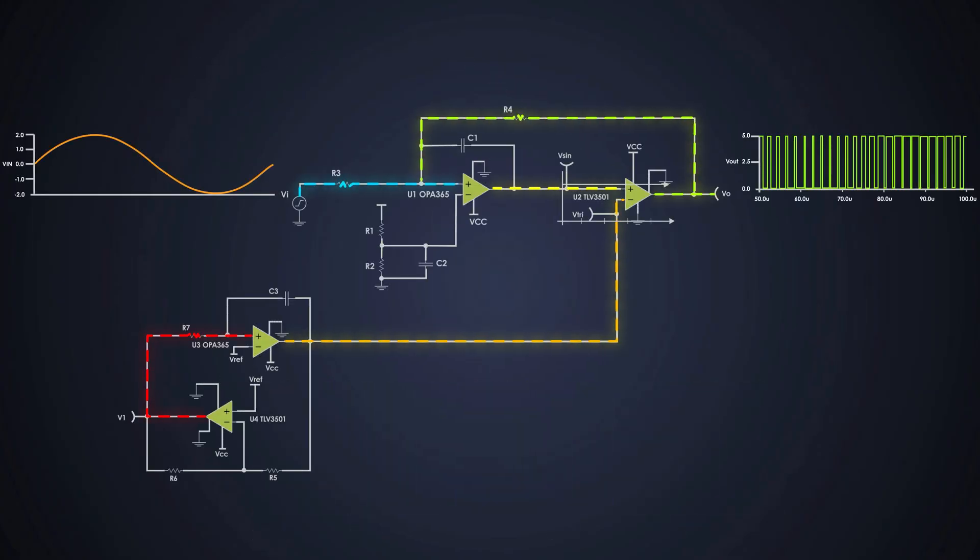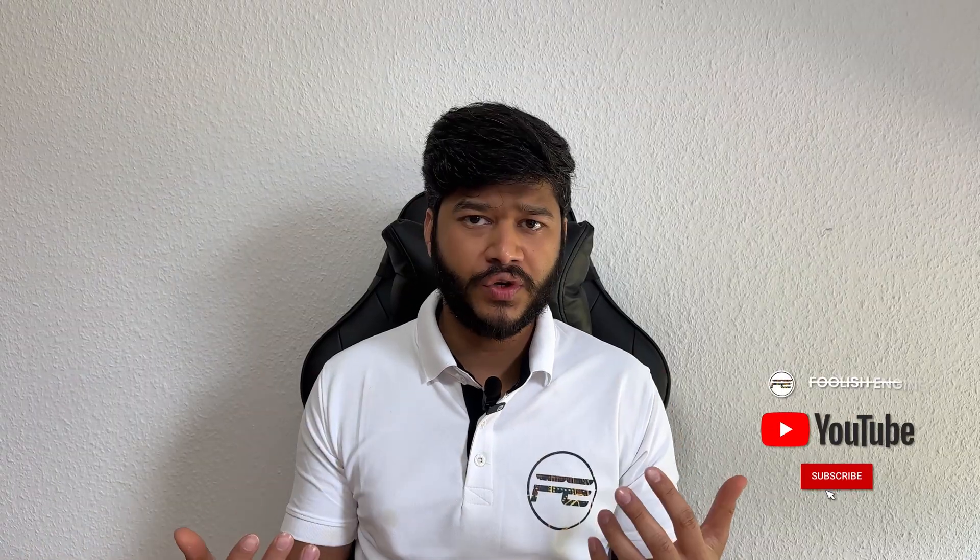And there you have it, a complete analog PWM generator built with just few op amps, resistors and some clever engineering. If you learned something from this, don't forget to check the description for references. If you found this video useful, hit that subscribe button and stay tuned for more exciting content.